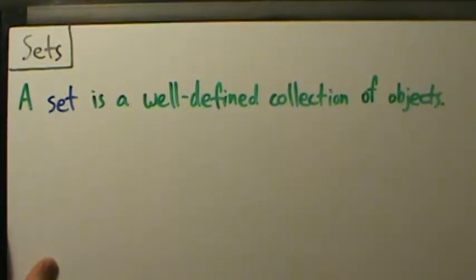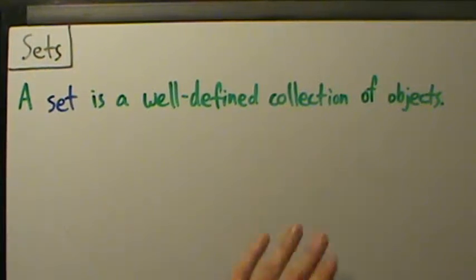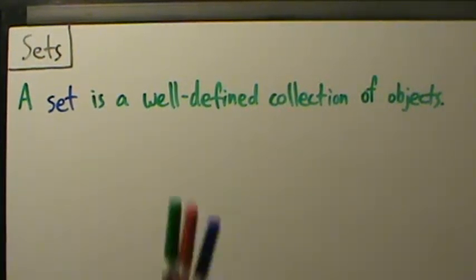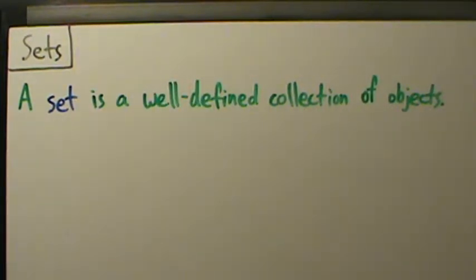A set, outside of a mathematical context, is just a collection of objects. For example, this collection of markers that I'm holding in my hand here, or we could say a collection of really bad movies, something like that.